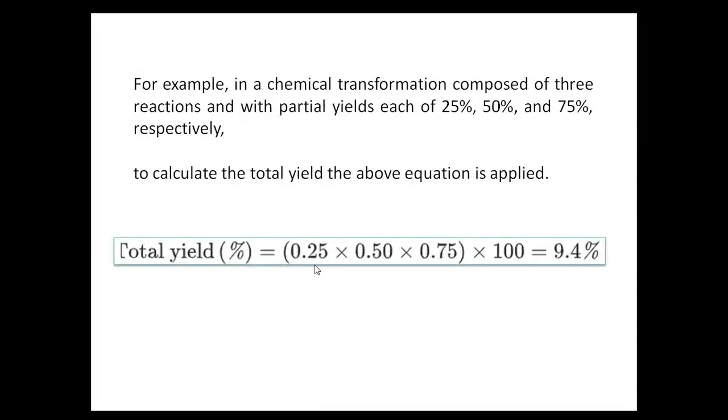Converting to decimals: 0.25 times 0.50 times 0.75 times 100 equals 9.4%. The total overall yield is 9.4%.